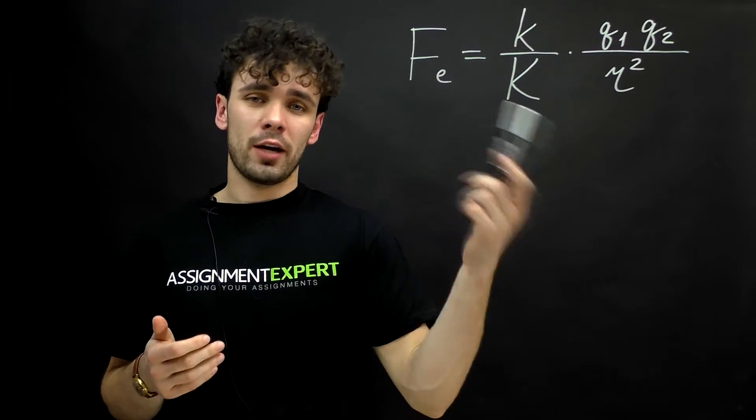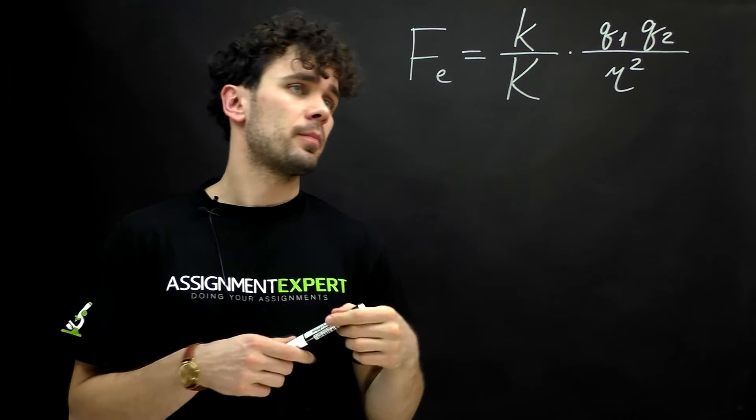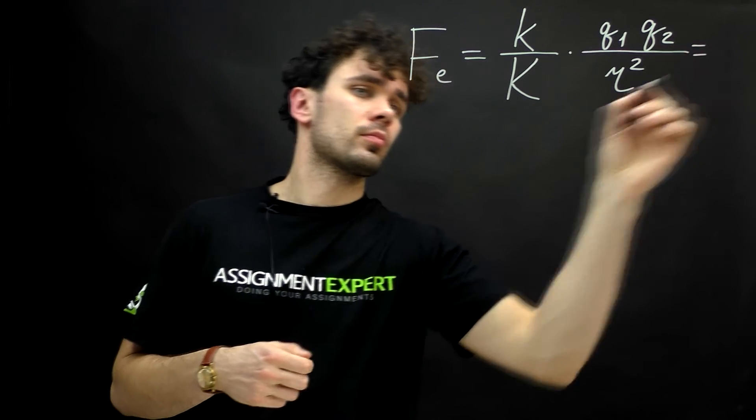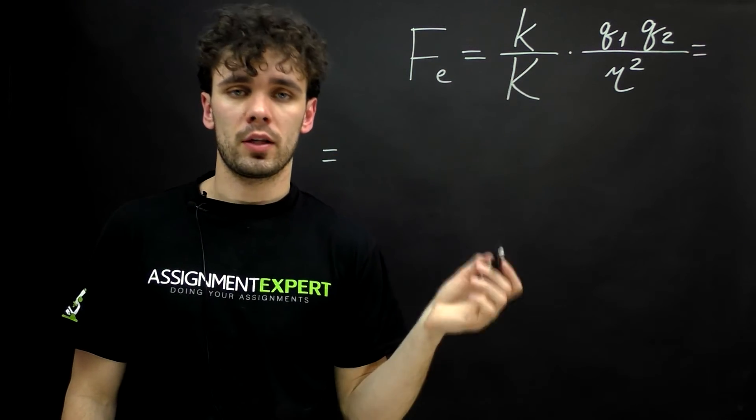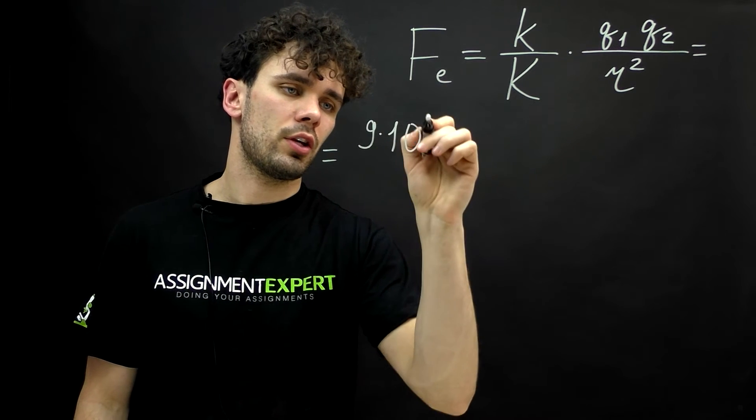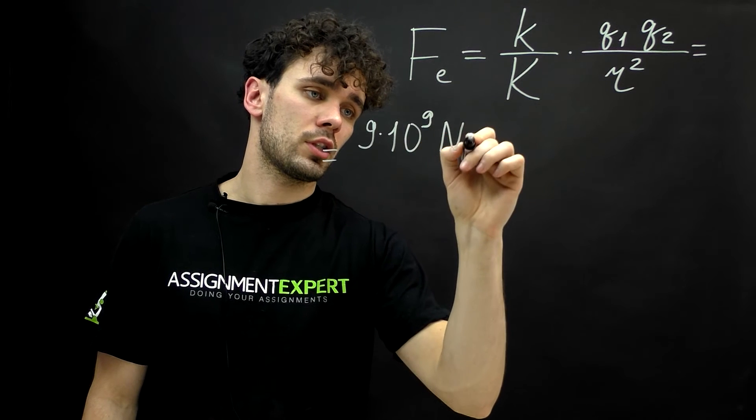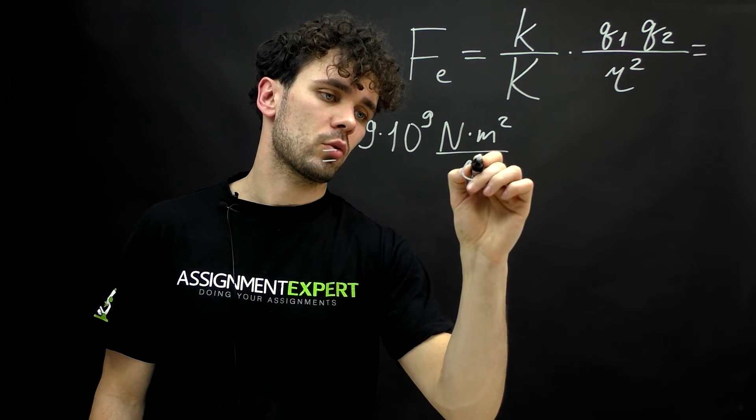So, now as we have the formula, let's put all the variables inside of it. First we have Coulomb constant. It is 9 times 10 raised to the 9th power newtons times meter squared over coulomb squared.